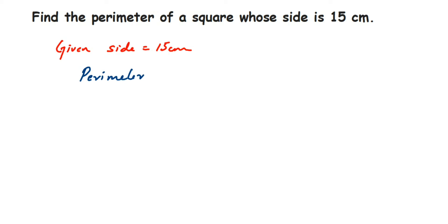Perimeter of square is equal to 4 times side. Or you can do side plus side plus side plus side. Instead of adding side 4 times, it's better to do 4 times side. So 4 times side, where side value is 15, so 4 times 15.